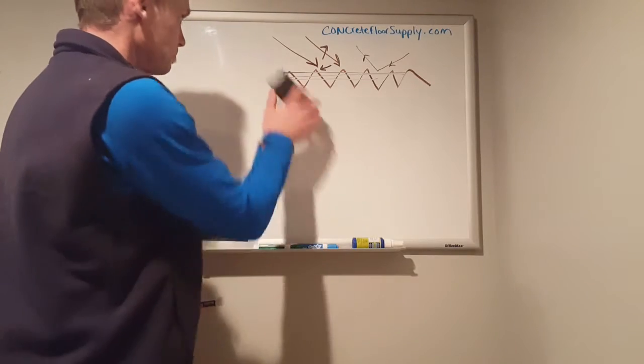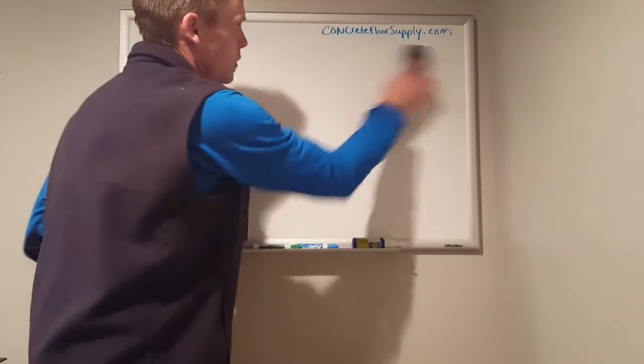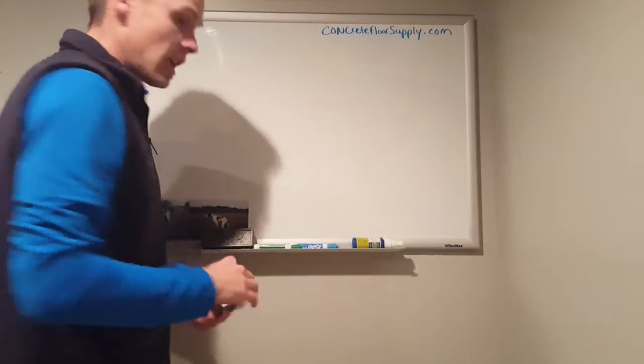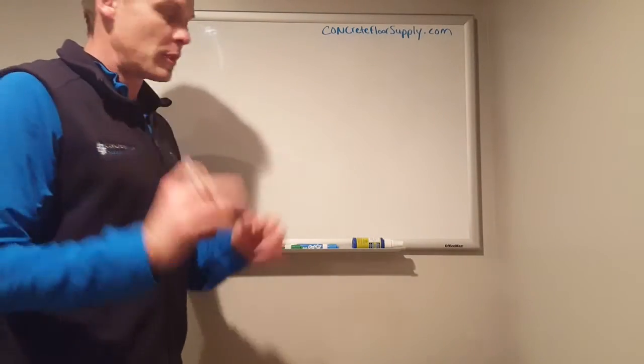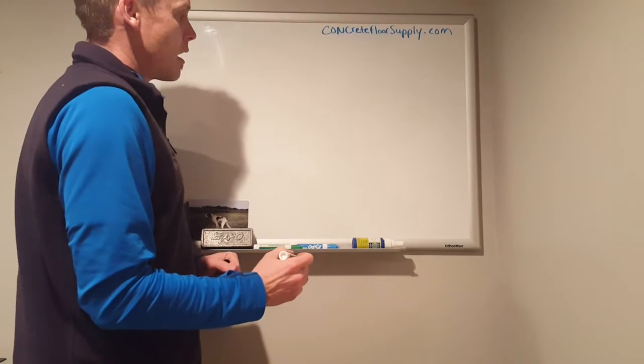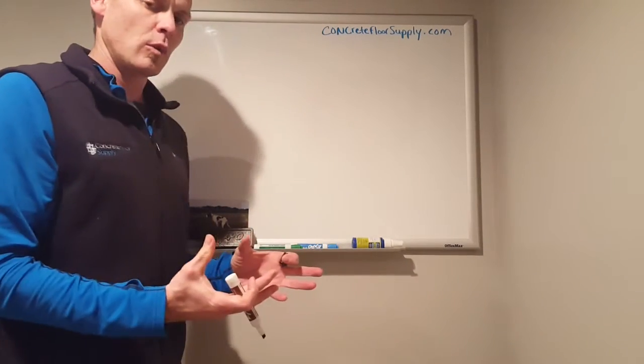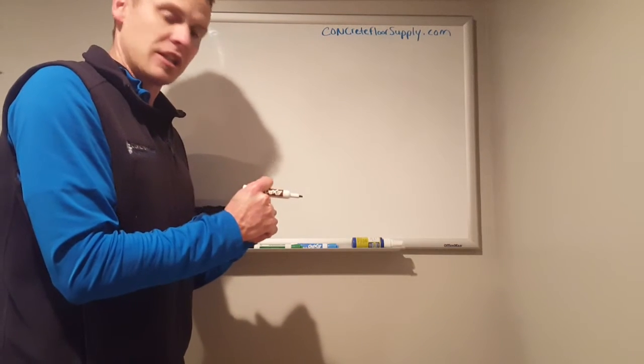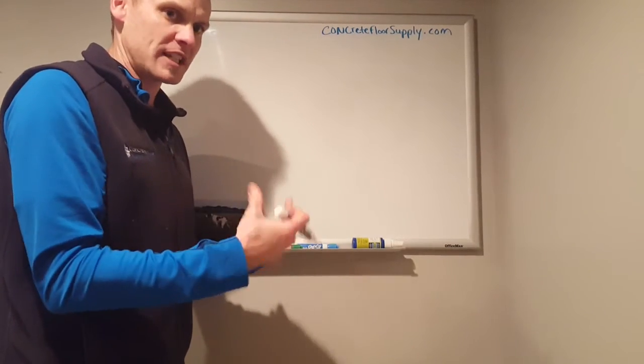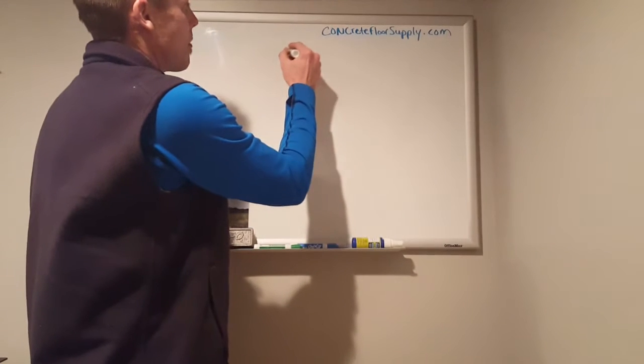Now how do you do that? Well you do that through the use of diamond tooling and working through successive tooling. Diamond tooling works in grits and the smaller the number the larger the diamond particle meaning the more aggressive it is. Let's talk about metals real quick and then we'll talk about resins.